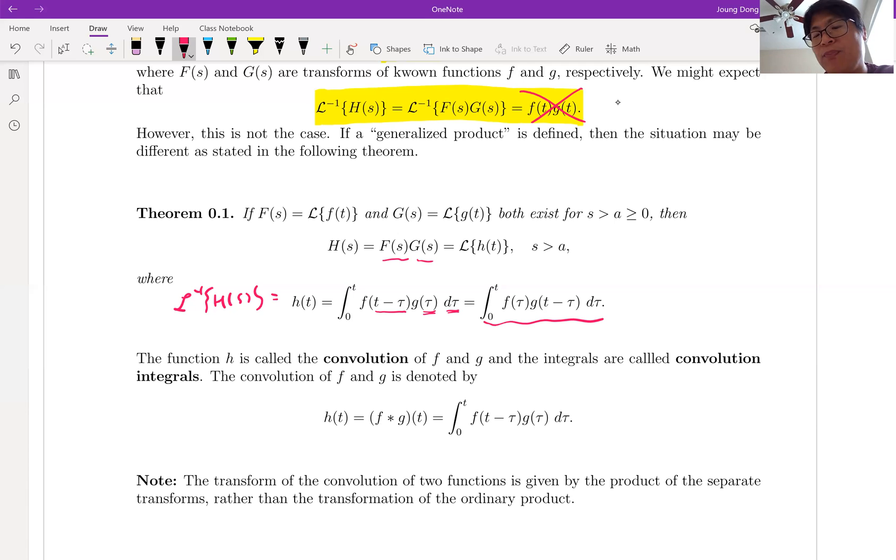We can change the order. F convolution integral, I mean F star. Let me just show the notation for convolution. It is F star. We say F star G, convolution function F star G. Then we can say F star G is equal to G star F. That's exactly this property. So we can say H is the convolution or we can say F star G, which is convolution. Then this integral part is the convolution integral.